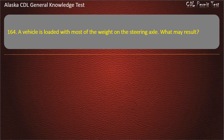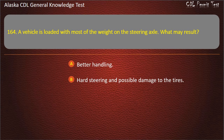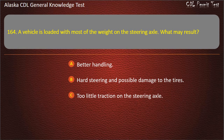Question 164. A vehicle is loaded with most of the weight on the steering axle. What may result? Better handling, hard steering and possible damage to the tires, or too little traction on the steering axle. Answer: Hard steering and possible damage to the tires.